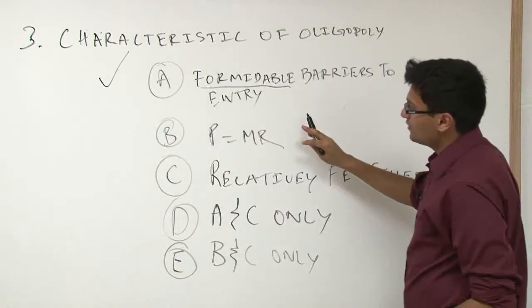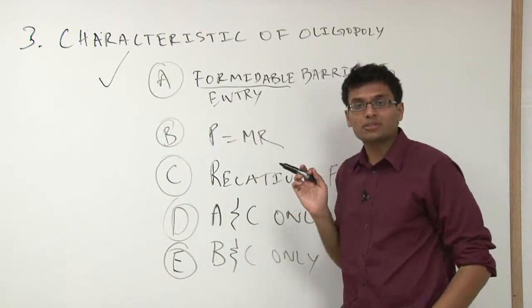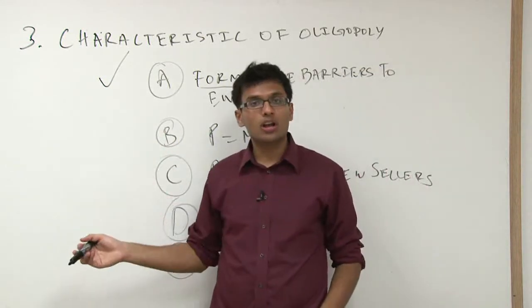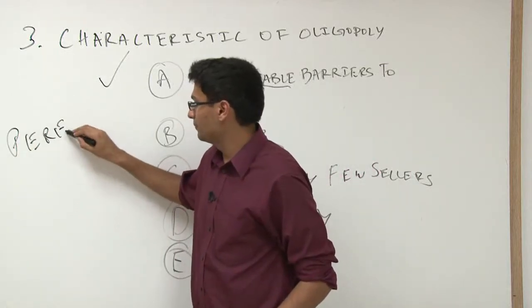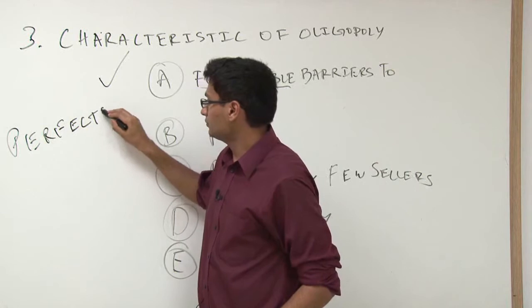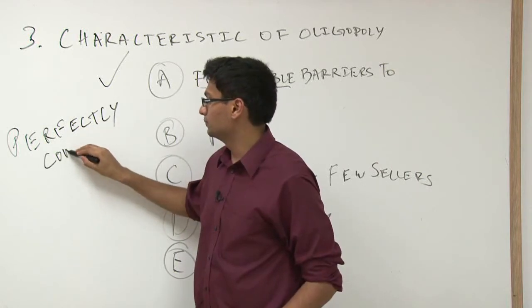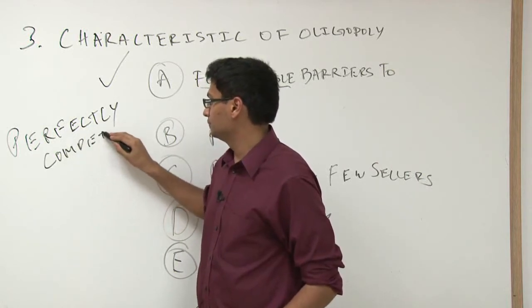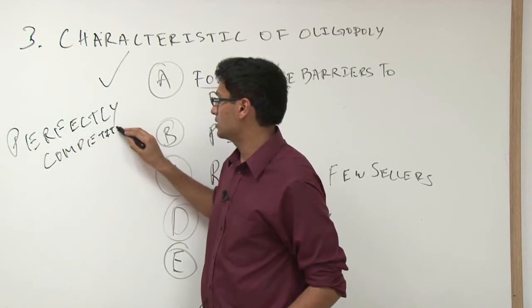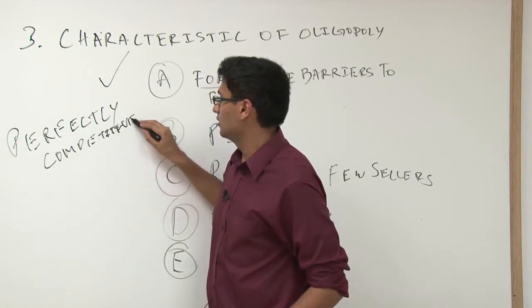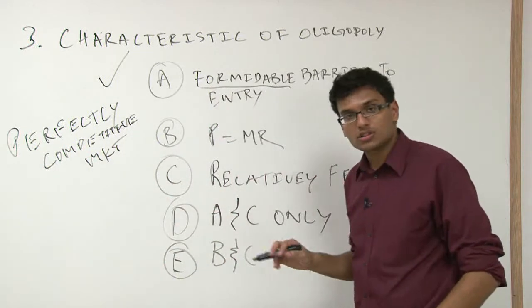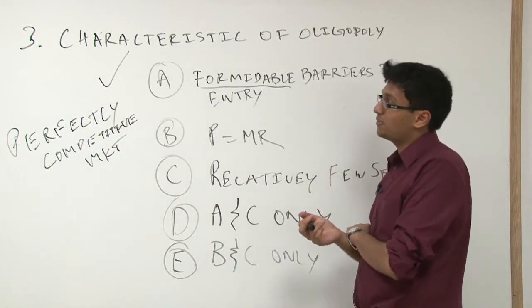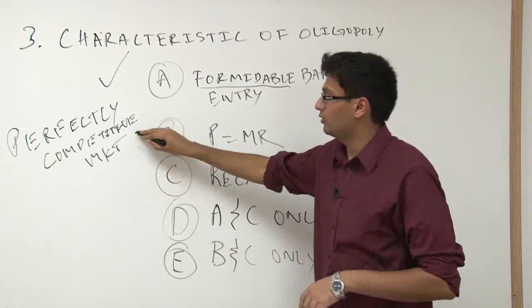Price equals MR. This is a very key characteristic of perfect competition, right? When you have P equaling MR, we know that we're in a perfectly competitive market. So we know that that's true. Well, this is not perfect competition. This is actually an oligopoly, so nope, definitely not true.